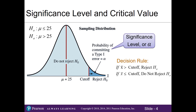The significance level is the maximum allowable probability of committing a type 1 statistical error, denoted by alpha. Type 1 errors are false positives where we believe the alternative hypothesis is true when it's not. The decision maker gets to choose alpha based on how costly the error is in business. If a type 1 error is very costly we want a small alpha; if it's not very costly we can allow a higher alpha value.